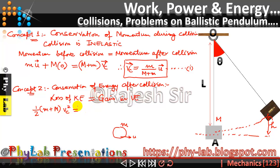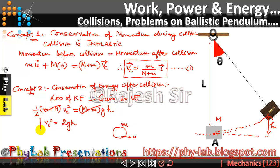This kinetic energy is getting converted into gravitational potential energy as the bullet-block system rises from the lowest point to height h. The gravitational potential energy is (M + m)gh. The (M + m) terms cancel out, giving us Vc² = 2gh. Let me call this the second equation, which helps me obtain the height gained by the bullet-block system.